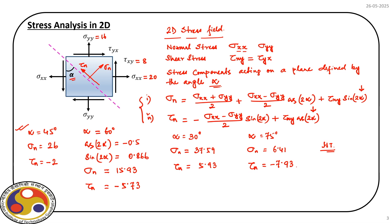What is so special about this entire analysis? The key point is: if we change the value of alpha, we get sigma_n and tau_n acting on that plane. If we vary alpha from −180° to +180°, we get the complete combination of sigma_n and tau_n that we can expect — and we will see how they change as we keep varying alpha.